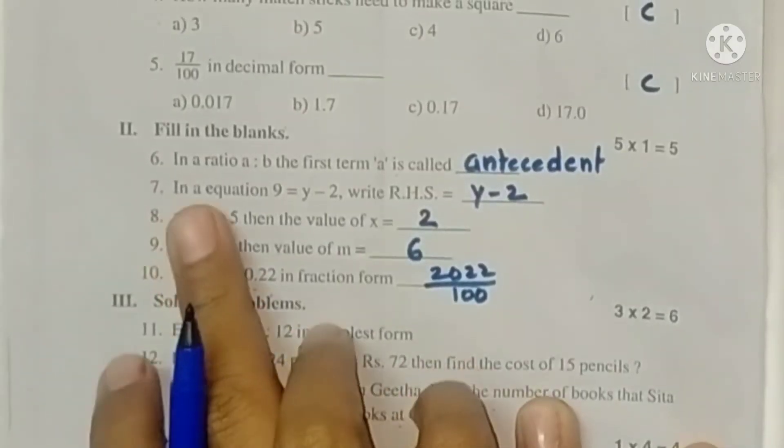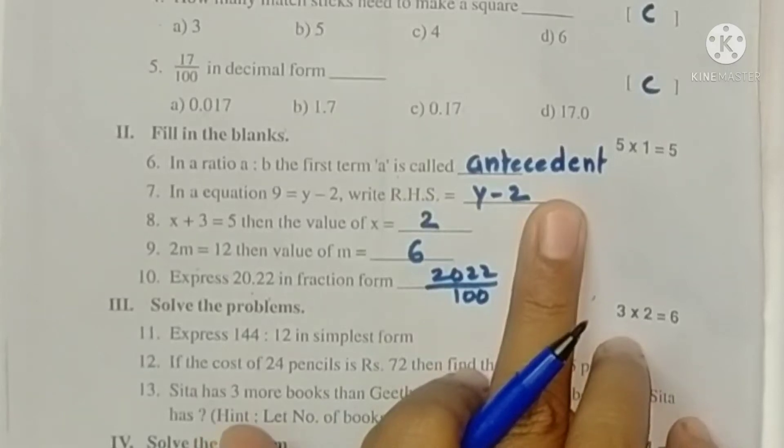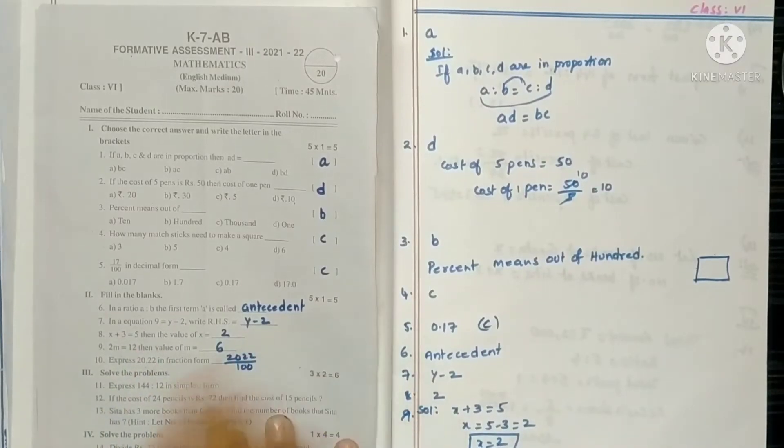Next, fill in the blanks. In a ratio A is to B, the first term A is called antecedent, second term consequent. So the first term is antecedent.